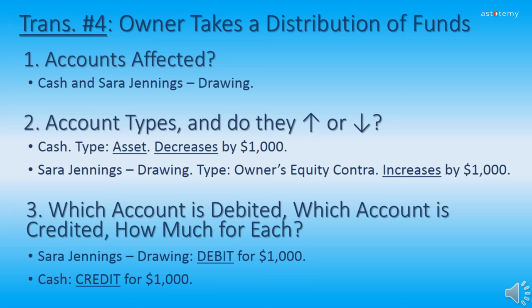Going through the first three steps for Transaction 4. Step 1: the two accounts affected are Cash and Sarah Jennings Drawing. Step 2: Cash is an asset type and will decrease by $1,000 since she's taking money out of the company. Sarah Jennings Drawing is an owner's equity contra account and will increase by $1,000. Step 3: Sarah Jennings Drawing will increase with a debit for $1,000. The Cash account will decrease with a credit for $1,000.